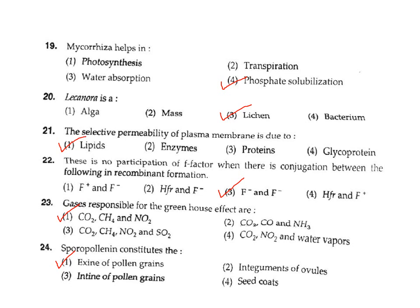Question 19: Mycorrhiza helps in what? Mycorrhiza helps in phosphate solubilization. Correct answer Option 4.